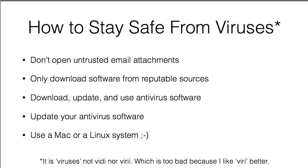How do you stay safe from viruses? Don't open untrusted email attachments — if you get an email from someone claiming to be a Nigerian prince with an attachment, don't open it. Only download software from reputable sources, and make sure you know what the site is before you run anything. Download, update, and use antivirus software — that's by far the most important thing. Microsoft offers a malware suite that's pretty good, and AVG antivirus is another good one. Always keep your antivirus software up to date, since viruses change over time and outdated software won't know what to look for.